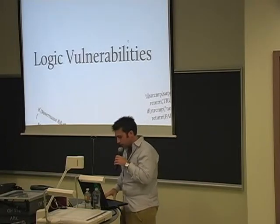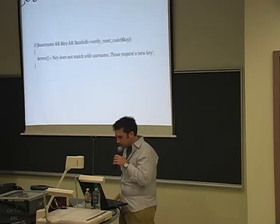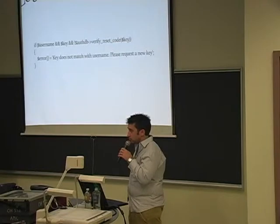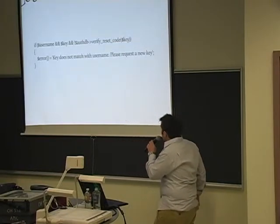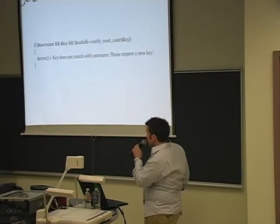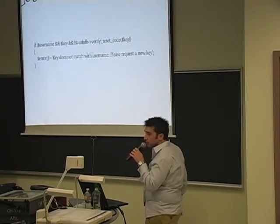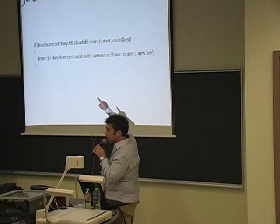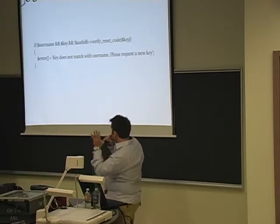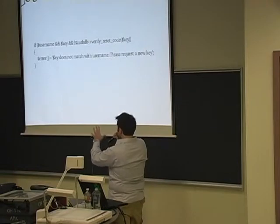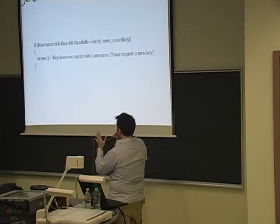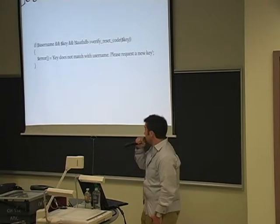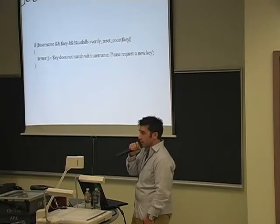This is actually my favorite type of vulnerability: logic vulnerabilities. Here's a PHP code snippet I audited. Username and key are both supplied by the user, and if you pass this check, you're completely authenticated to the system. The issue is it uses the double ampersand. This if statement will only execute if username is supplied AND the key is supplied AND the authentication fails. So if I don't give it the key or the username, I totally win and basically bypass the authentication.